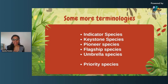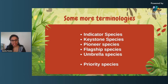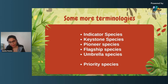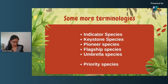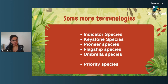Flagship species are basically those species that serve as ambassador species or a symbol of that habitat. These species are important to that habitat, and a lot of conservation efforts around that habitat can happen because of them — for example, tigers in the Sundarbans. Flagship species may or may not be indicator species; there's no hard and fast rule. An indicator species can be a flagship species, but not every flagship species has to be an indicator species.